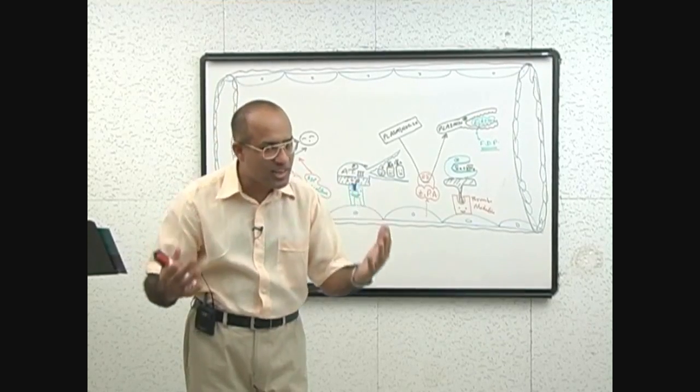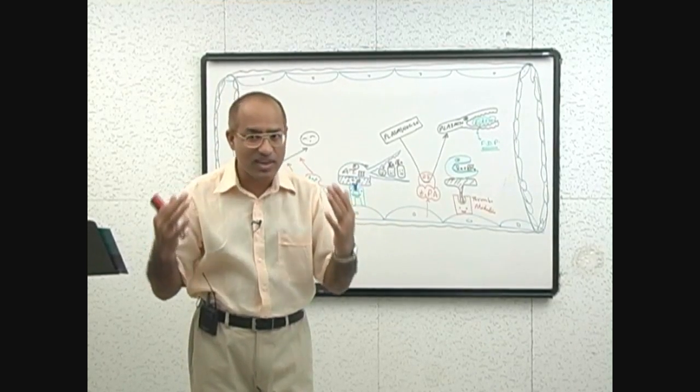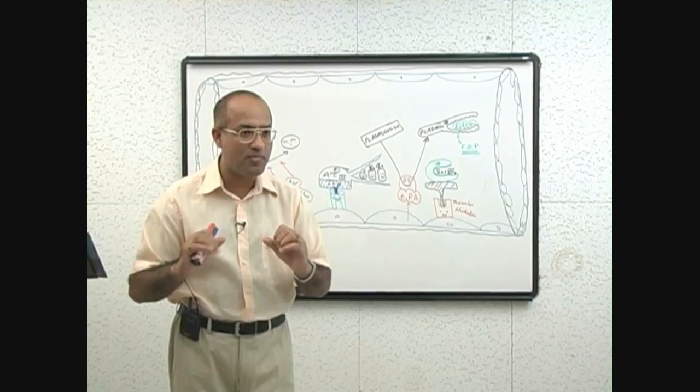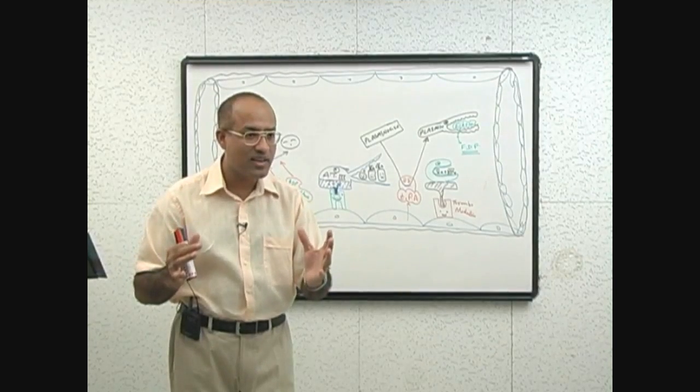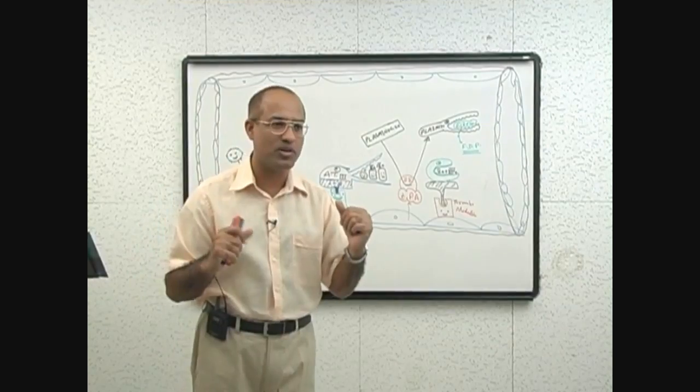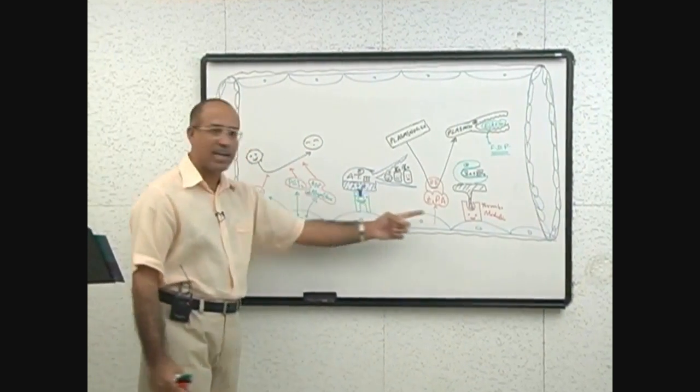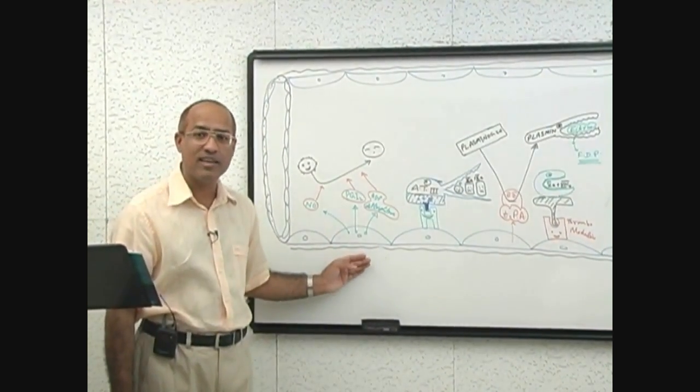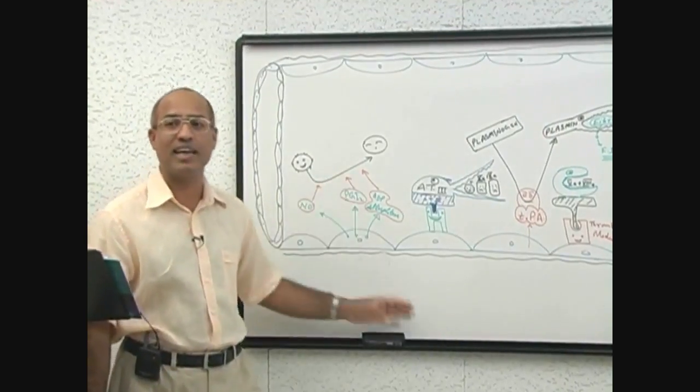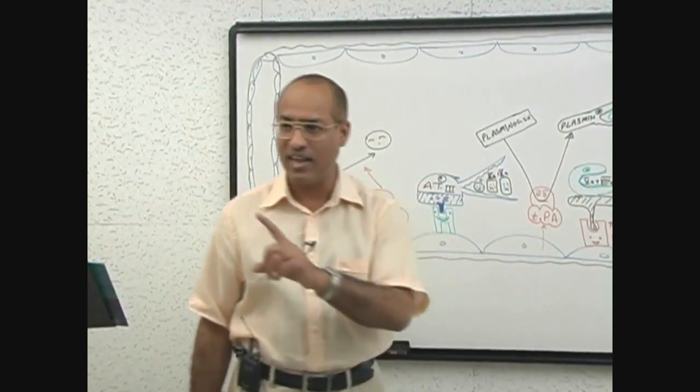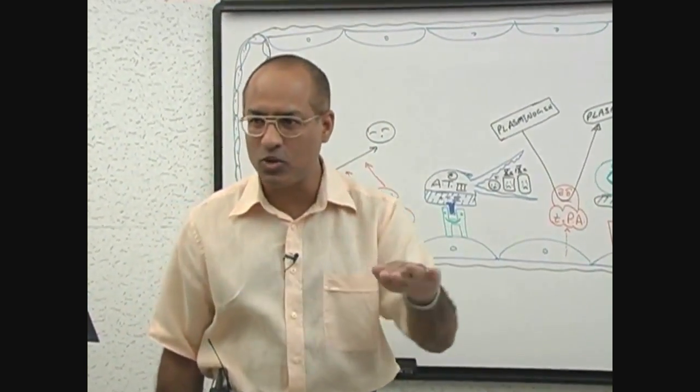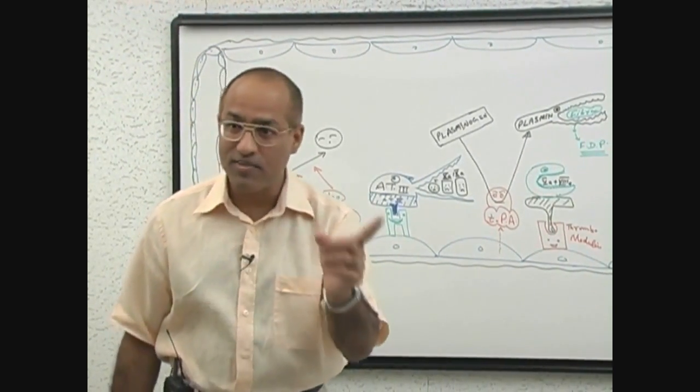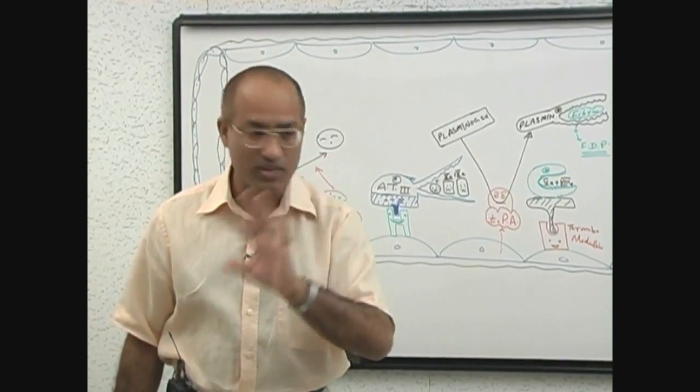And whenever endothelium is injured, platelet plug will form, coagulation will occur. Why and how will this occur? Now we will talk about. Up to now we are talking about healthy endothelium. We say healthy endothelial lining is a tissue which is anti-thrombotic and anti-coagulant. Healthy endothelium is anti-thrombotic, anti-platelet, and anti-coagulant.